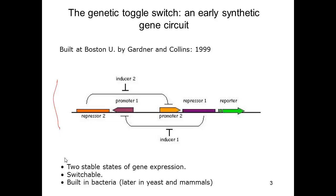On this slide, we see perhaps the single most famous synthetic genetic circuit that has been created. It was in fact created here in 1999 by Jim Collins and Tim Gardner, and it is called a genetic toggle switch. This is one of the very few circuits that have established the entire field of synthetic biology — truly landmark work done here at Boston University.